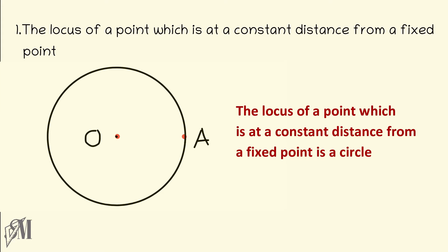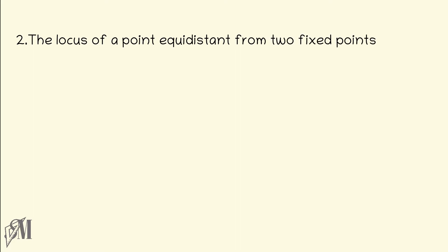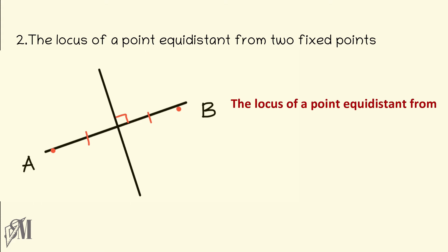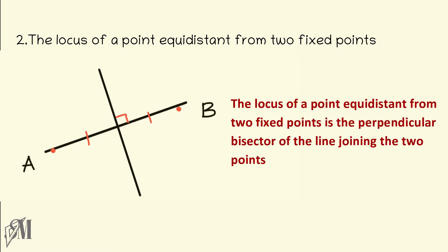The next locus is the locus of a point equidistant from two fixed points. A and B are two fixed points. We are going to find the path of a third point which is at equal distance from both A and B. To maintain equal distance from both A and B, the path must be the perpendicular bisector of the line joining A and B. Therefore, the locus of a point equidistant from two fixed points is the perpendicular bisector of the line joining the two points.